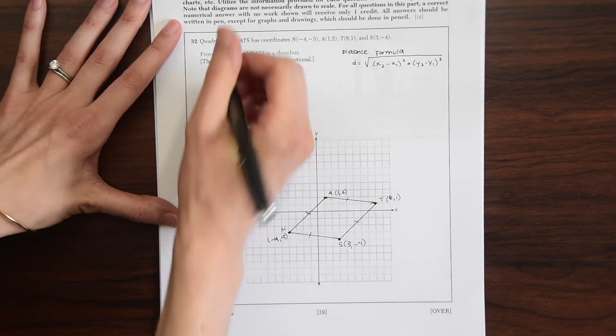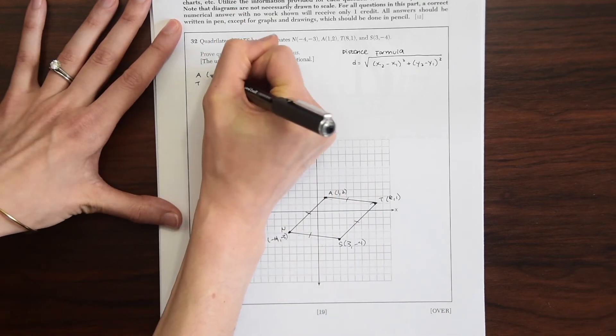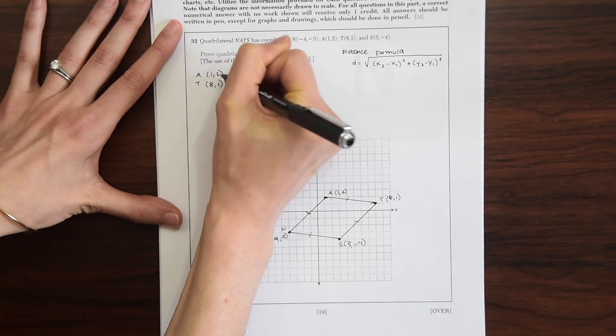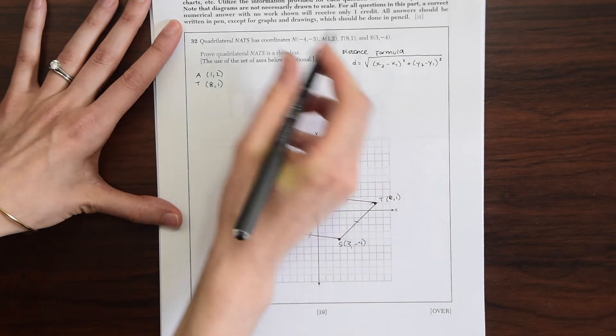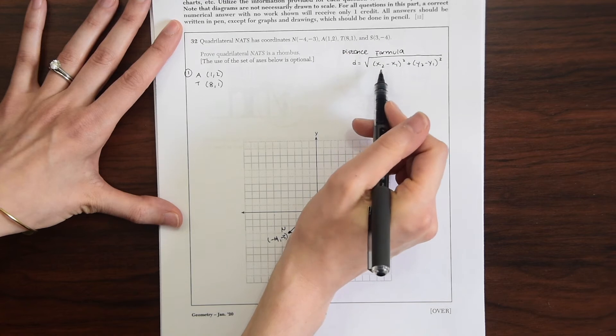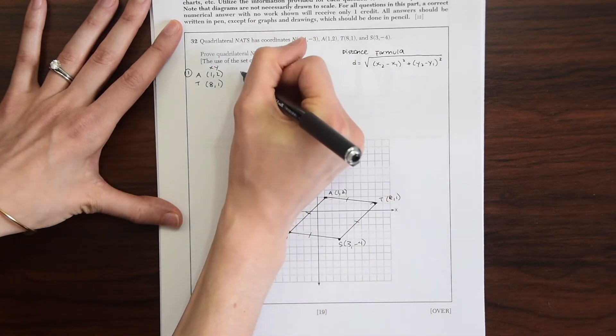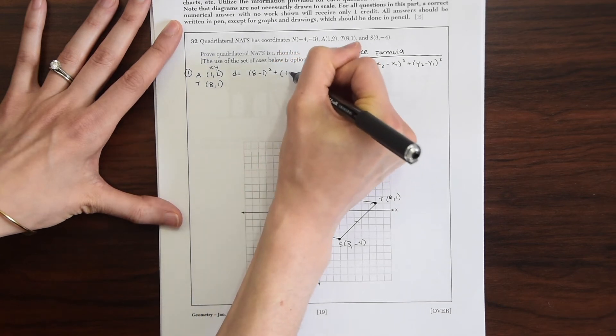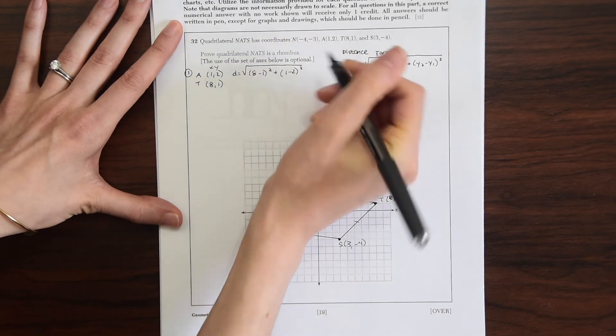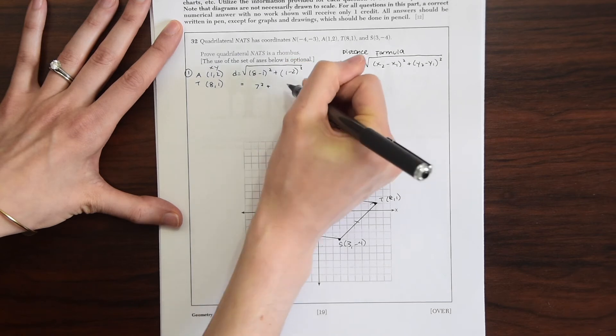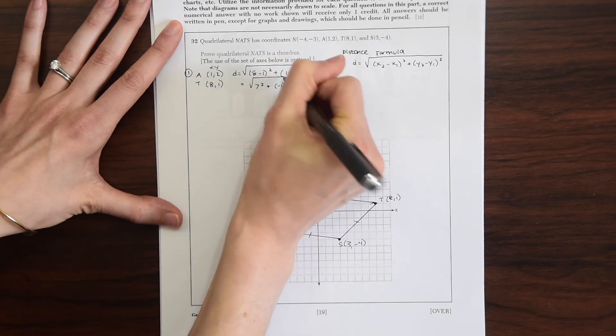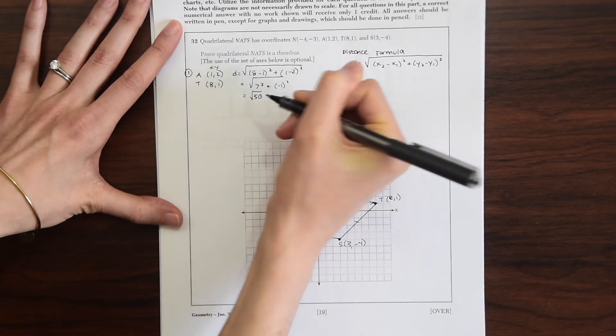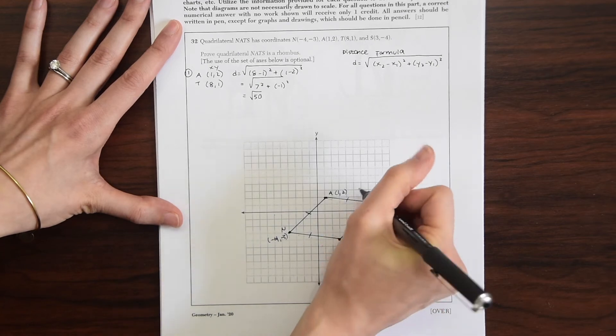So let's just take this first side here, AT. So we'll do that by taking the coordinates. A is (1,2), T is (8,1). And now we want to plug this into our formula. So we're just plugging this into our formula. And when we do that, we'll get (8-1)² + (1-2)². And then this is all under the square root. So this gives us 7² + (-1)², which will give us 49 + 1, which gives us √50. So we know that this side, AT, is equal to √50.